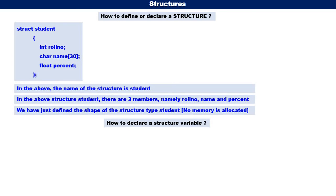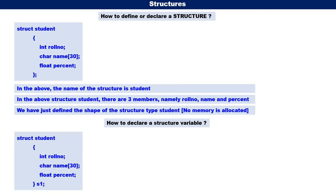Next, how to declare a structure variable? After defining the shape, before ending it with a semicolon, we write S1, meaning S1 is a structure variable of the type student. Or we can also define like this: struct student S1, meaning S1 is a variable of the type structure student. We can declare a structure variable either way.